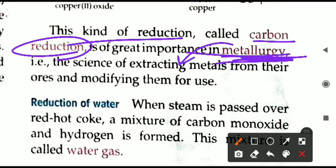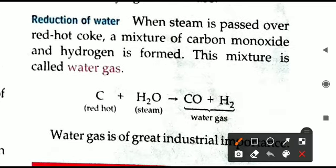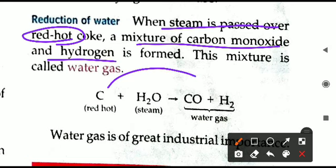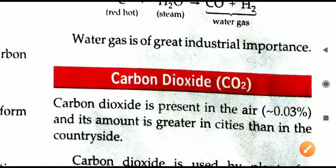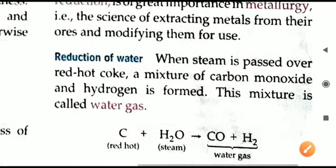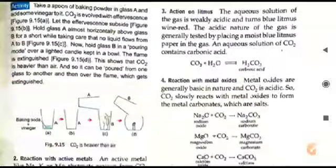Carbon reduction is used in metallurgy to obtain different metals from their ores for practical use. Next, we see the reduction of water: when steam is passed over red-hot coke, a mixture of carbon monoxide and hydrogen is formed — this is called water gas. Carbon converts to CO, and hydrogen is produced from water (H₂O). That is all for today; we will continue in the next video. Thank you.